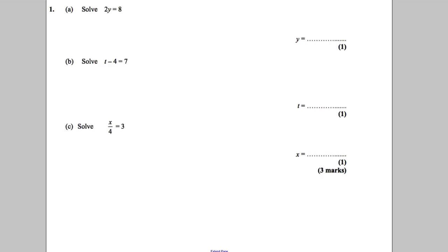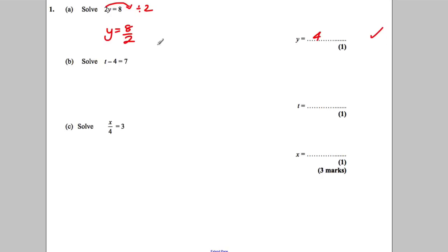We've got 2Y is equal to 8. So we divide both sides by 2. Y is equal to 8 divided by 2, which is 4. Y equals 4. Check: 2 times 4 is 8. Definitely got it right.